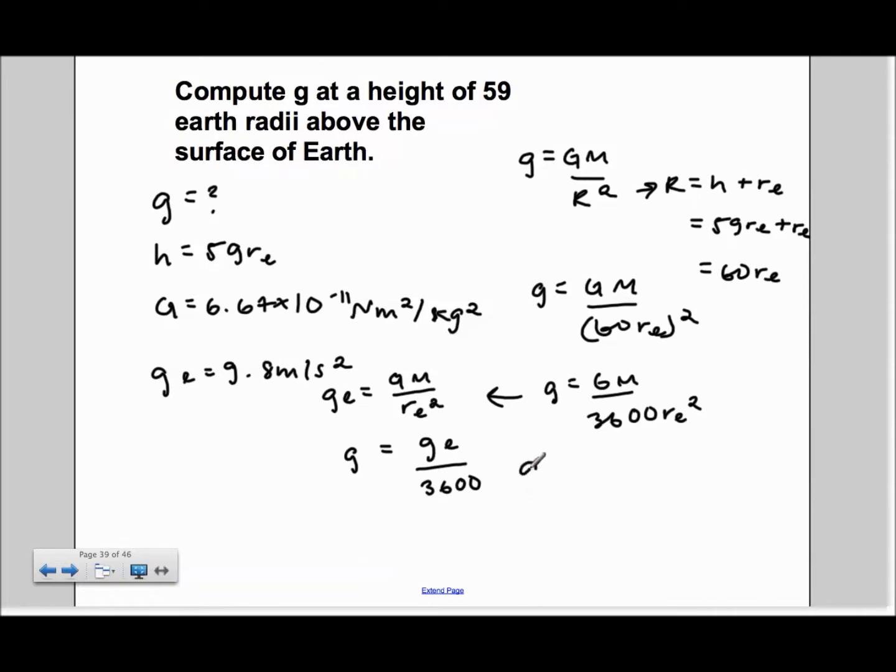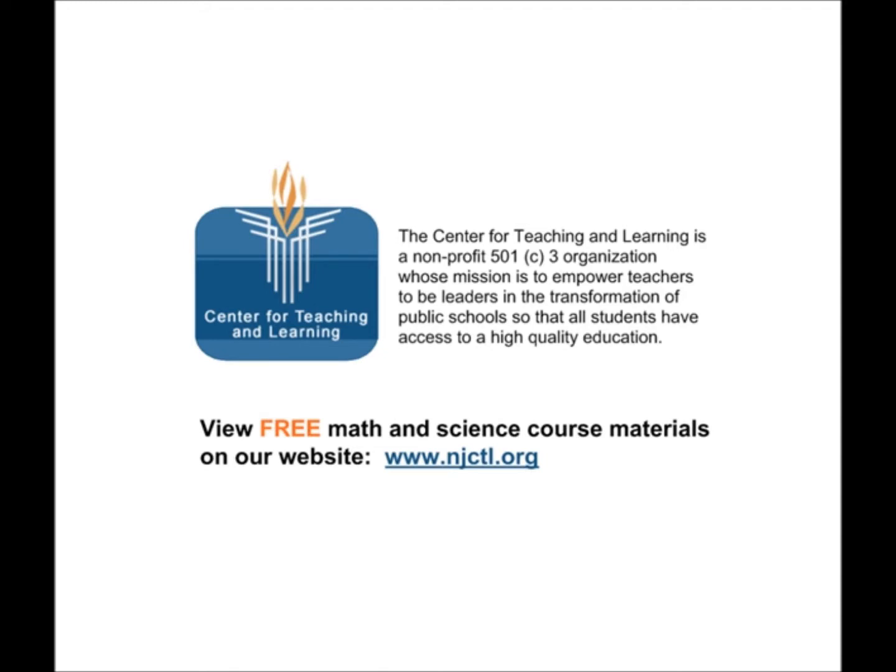So we get g is equal to 9.8 over 3600, and we get an answer of 0.0027 meters per second squared.